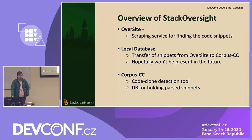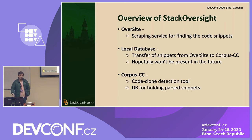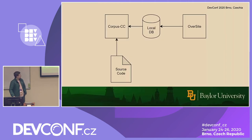So we have a local database which transfers the snippets from Stack Overflow to the actual code detection section, which is Corpus CC. Right now it's not a great solution — it came about because we were developing Corpus CC and Oversight separately and hadn't figured out how the whole pipeline was going to work yet. Oversight stuck all its snippets in a database and now we're pulling from it. We'll be looking at better solutions in the future. Corpus CC is the actual code clone detection tool, which handles the tokenizing, parsing, and comparison.